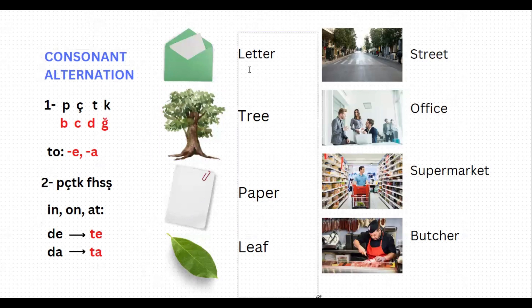Our first word here is 'letter,' which is 'mektup' in Turkish. If you want to say 'to the letter,' then it is going to be 'mektup-a.' But as you see, this word is ending with p, which is one of peçeteğe, so it needs to alternate to b. So 'to the letter' in Turkish is 'mektuba.'